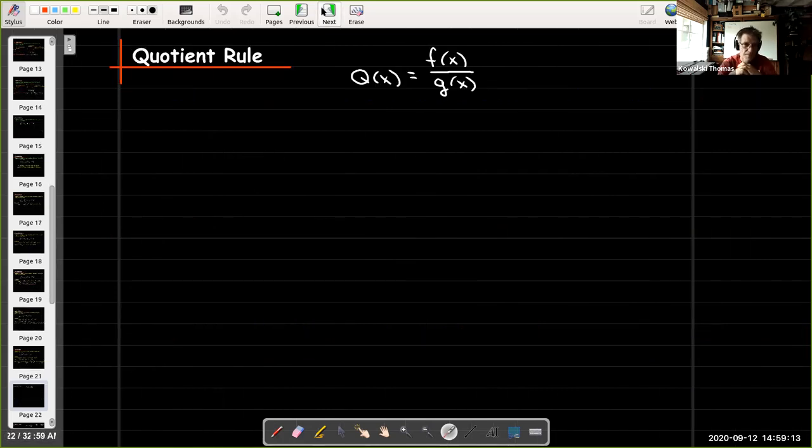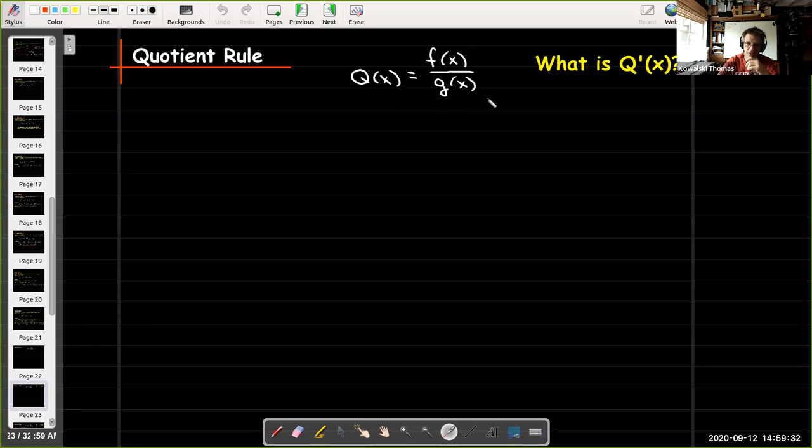Our second rule is the quotient rule. So now I have a function Q(x), which is f(x) divided by g(x). And we'd like to get a formula for Q'(x) using the derivatives of f and g.